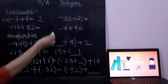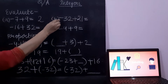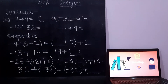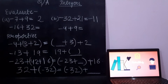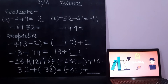Now the next one. Minus 32 plus 21. The answer is minus 11. Why is it minus 11? Because 32 is greater than 21, and there is one positive integer and one negative integer. So we have subtracted and given the sign of the greater number.